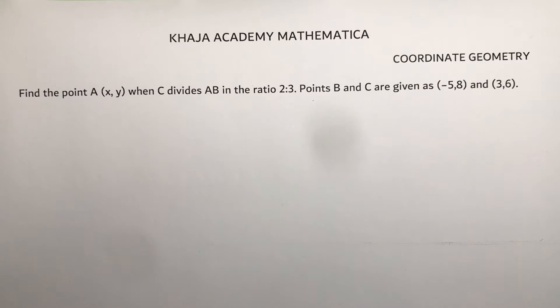Find the point A, X comma Y, when C divides AB in the ratio 2 is to 3. Points B and C are given as minus 5 comma 8 and 3 comma 6.